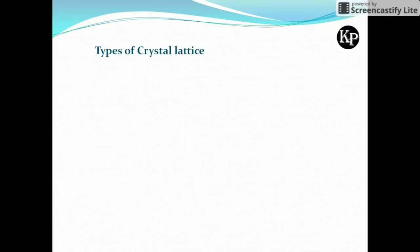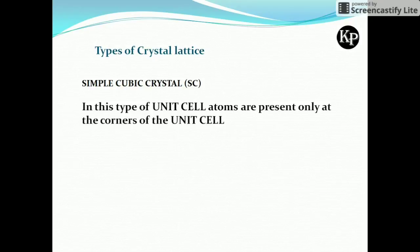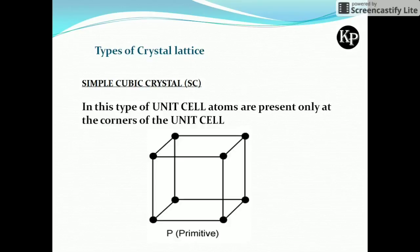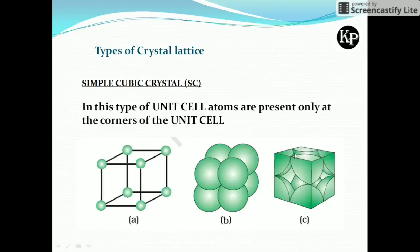Now let's learn the types of crystal lattice. The first type is the simple cubic structure. In this type of unit cell, atoms are present only at the corners. See the figure — the black dots are atoms present at the corners. This is called the simple cubic structure, in which eight atoms are present at eight corners.